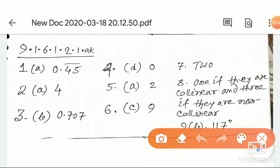Question number 1 is 0.45 bar. Second option A is 4. Third option B is 0.707. Fourth option D is 0.